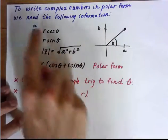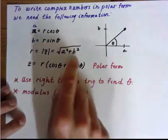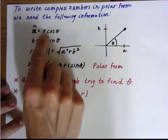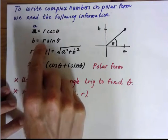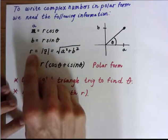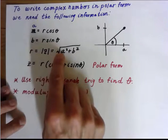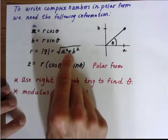A couple of things you want to be able to remember to write complex numbers in polar form. You need the following information. A equals R cosine of theta, B is equal to R times sine of theta. R, often called the modulus, which is just the distance, is the absolute value of Z, which is just the square root of A squared plus B squared.